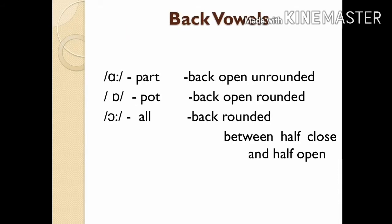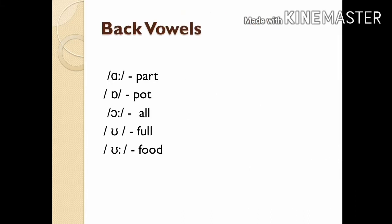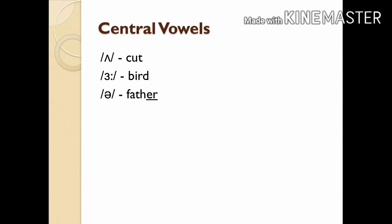Back vowels are vowels during the production of which the back of the tongue is raised towards the soft palate, and there will be sufficient space between them for the air to escape without any friction. These are the back vowels in English: /ɑː/ as in 'part,' /ɒ/ as in 'pot,' /ɔː/ as in 'all,' /ʊ/ as in 'full,' and /uː/ as in 'food.'